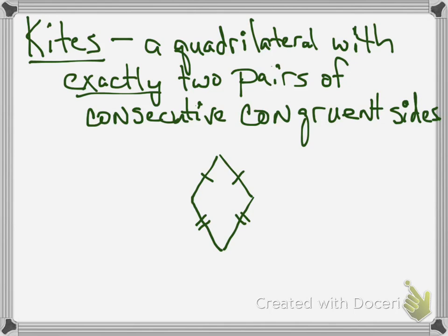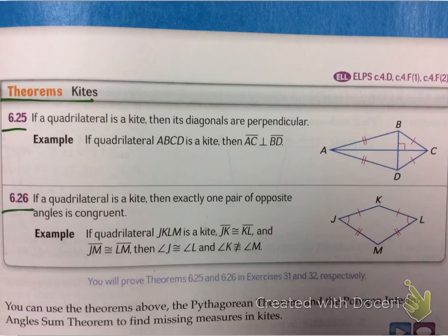And they kind of have to be labeled which ones. So kind of keep that in mind. So opposite sides, though, would not be congruent. Now, are there some special things here? Yes, a quadrilateral's diagonals are perpendicular. Also, one pair of opposite angles are congruent. Not both, just one.